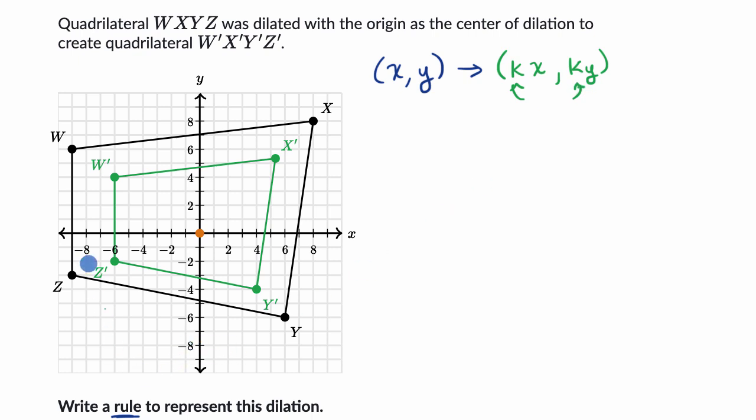Now there's a couple of ways you could do it. You could look at a corresponding side, especially one that runs horizontal or vertical, so that you can actually just count how long it is. For example, we could look at that length right over there. So we know that WZ is equal to, it looks like one, two, three, four, five, six, seven, eight, nine units.